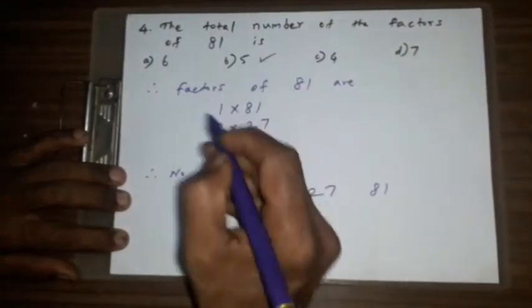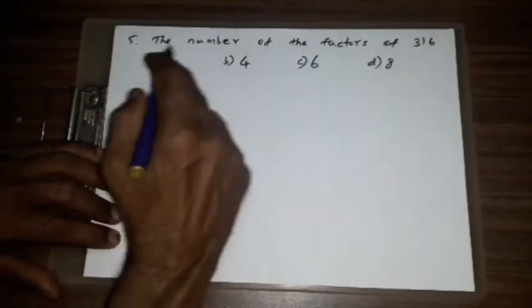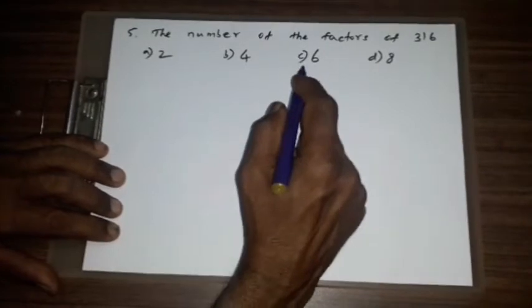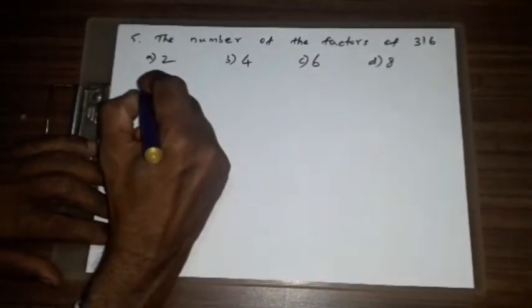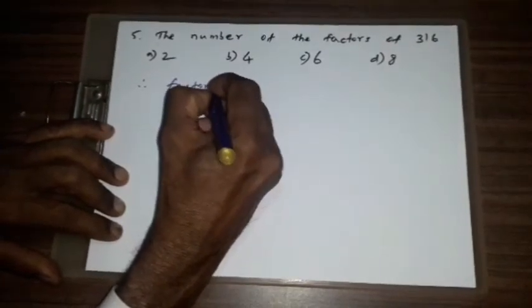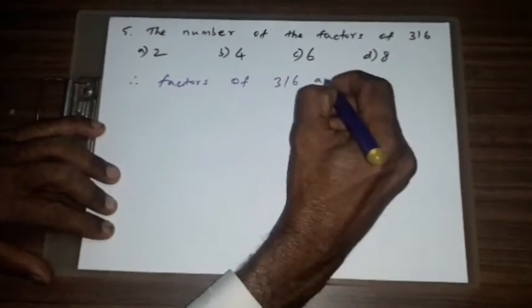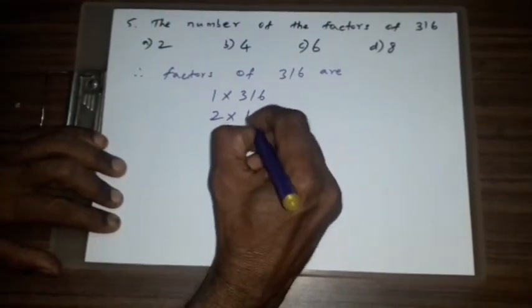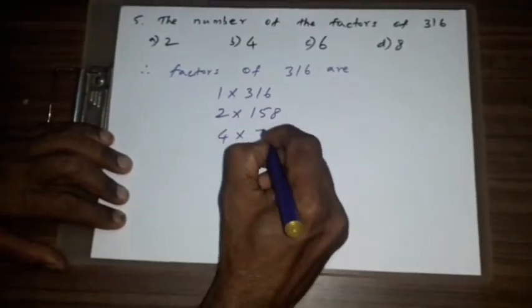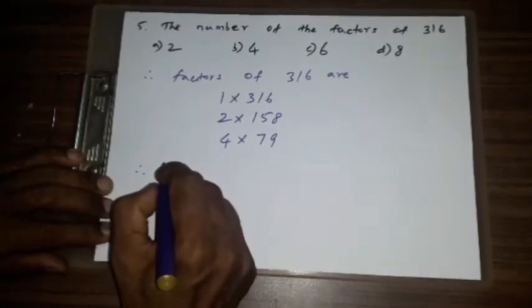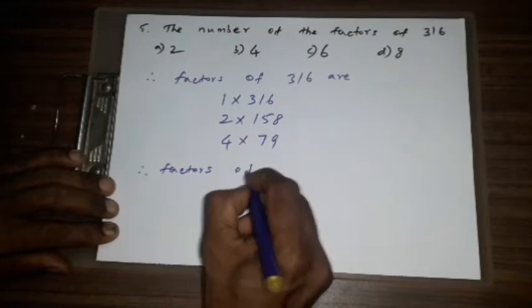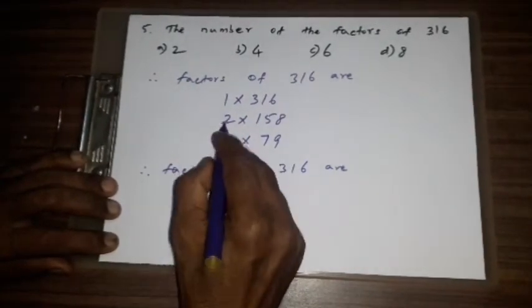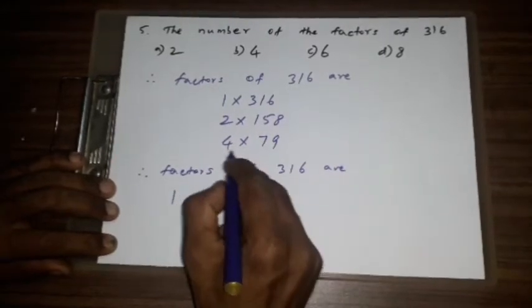Question number five: number of factors of 316 is A) 2, B) 4, C) 6, D) 8. So therefore, factors of 316 are 1 x 316, 2 x 158, 4 x 79. Therefore, factors of 316 are 1, 2, 4, 79, 158, 316.